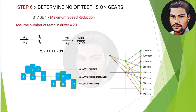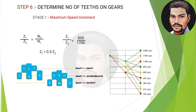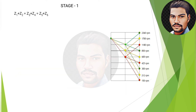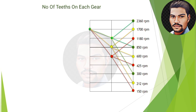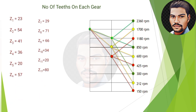To find the number of teeth for stage 1 gears, follow the same procedure: start with the gear giving minimum speed — gears 5 and 6. Assume Z5 (pinion) = 20 teeth; calculating gives Z6 = 57 teeth. Similarly calculate for gears 3 and 4, and gears 1 and 2. After all calculations, we obtain the number of teeth for every gear at both stages, completing the gearbox design procedure.